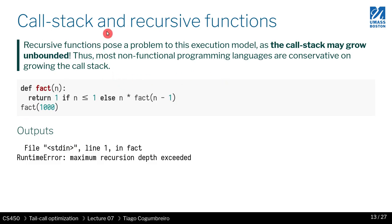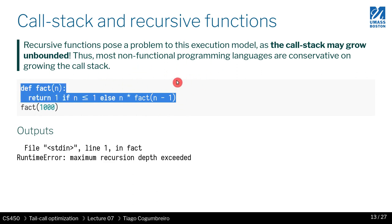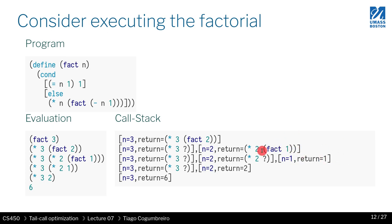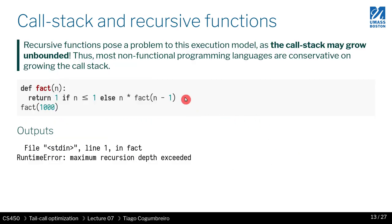With recursive code, the stack can easily grow unboundedly, and at some point you won't have enough memory to store the computation. In the history of programming languages, recursive calls were a major challenge. Back in the 70s it was important to understand how recursion works and implement it properly, because in some languages stack frames didn't even exist — recursive calls would mutate parameters and corrupt the internal state, causing misbehavior.